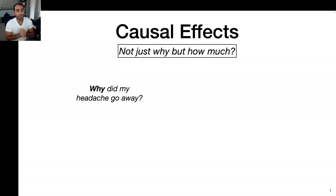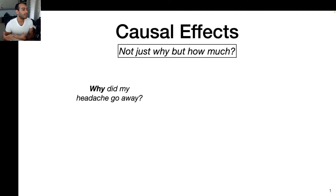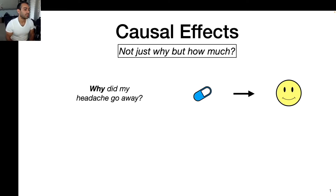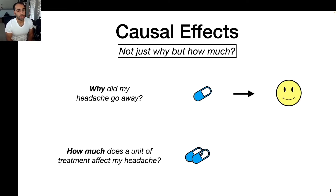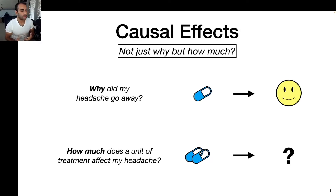One way we can think about causal effects is going beyond answering questions of why to answering questions of how much. For example, you might ask: why did my headache go away? What caused that? Maybe what happened was I took a pill, so the pill caused my headache to go away. But asking 'how much' would be: what if I took two pills? How much does a unit of treatment — an additional pill — affect my headache? That's what causal effects are all about: answering the question of how much.